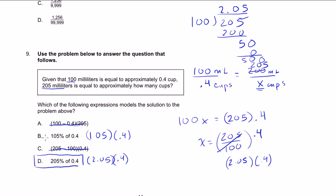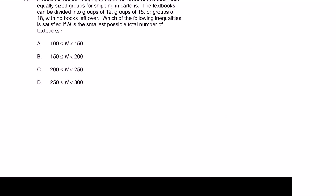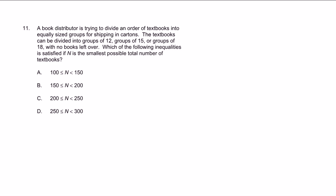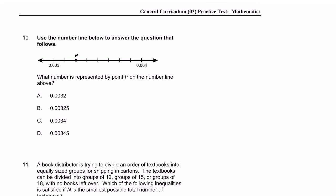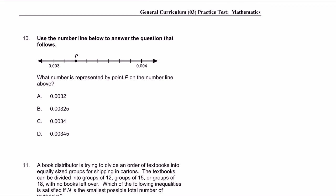So this thing is the same thing as 2.05 times 0.4, which is the same thing as 205% of 0.4. Choice D. Next problem. We are on problem 10. I'll switch colors. Use the number line below to answer the question that follows.